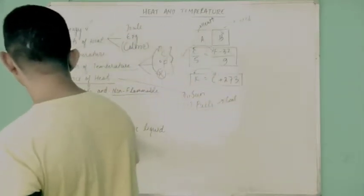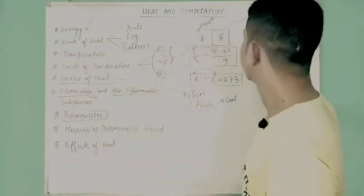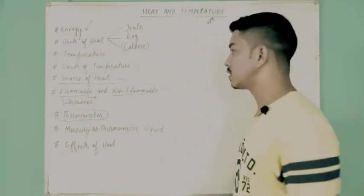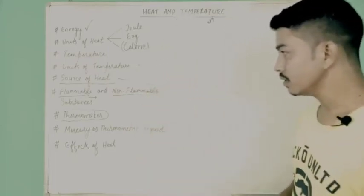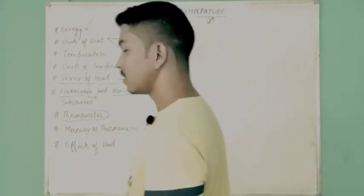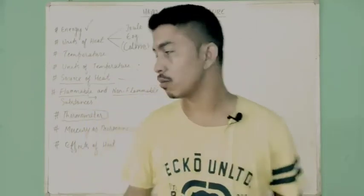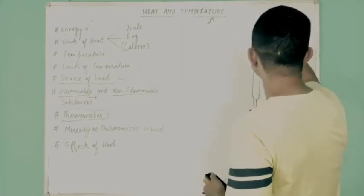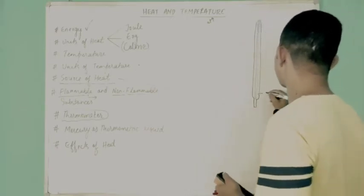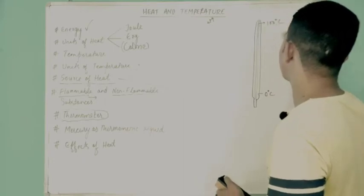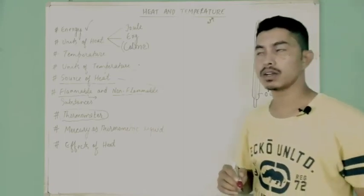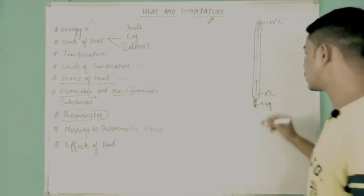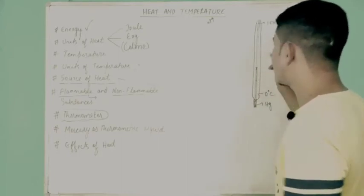The next important topic is the thermometer — a device used to measure temperature. A thermometer is a cylindrical glass tube with a small capillary inside and markings on it. The lower fixed point is 0 degrees centigrade, where water freezes, and the upper fixed point is 100 degrees centigrade, where water boils. Inside there is a bulb containing mercury. As temperature increases, the mercury rises in the capillary, allowing us to read the temperature.